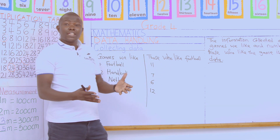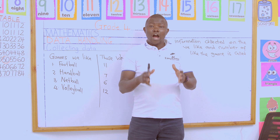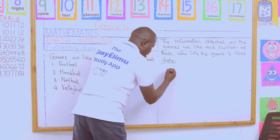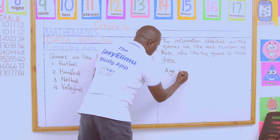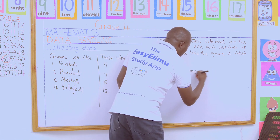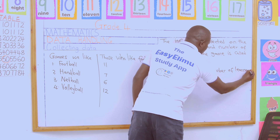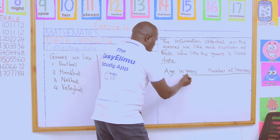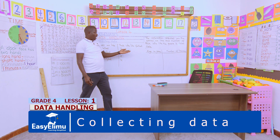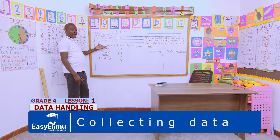I would like you to discuss and collect data on the ages of our learners in our class — how old each one is. So in our groups, we have age in years on this side and the number of learners in that age on the other side. The data we are collecting is age in years and the number of learners in that age — similar to how we did the games.